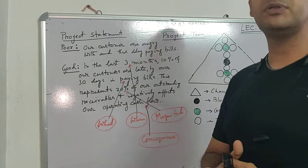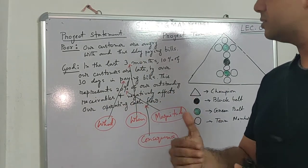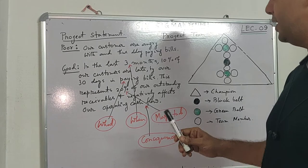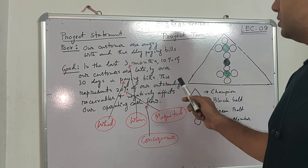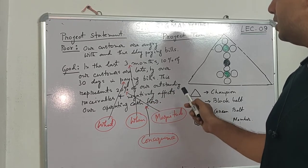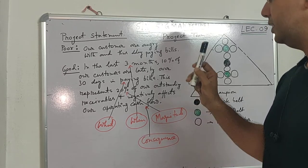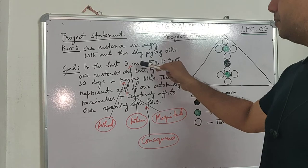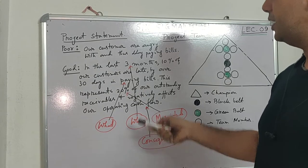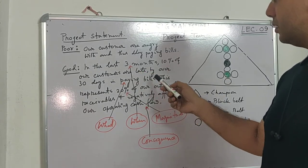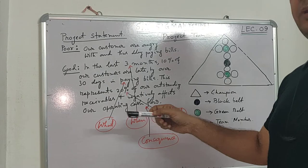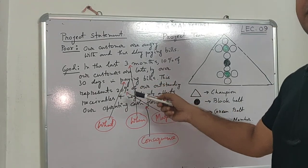Without data and specific values, a statement is not acceptable. A good project statement would be: 'In the last three months, 10% of our customers are late by over 30 days in paying bills. This represents 20% of our outstanding receivables and negatively affects our operating cash flow.' In this statement there is a time period — last three months — a customer scope — 10% of customers — and a clear main problem of delayed bill payment beyond 30 days.